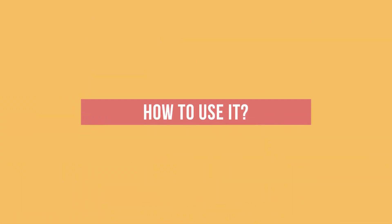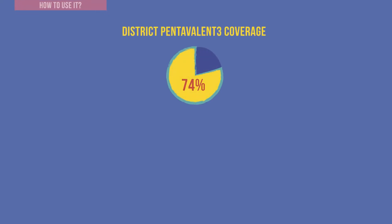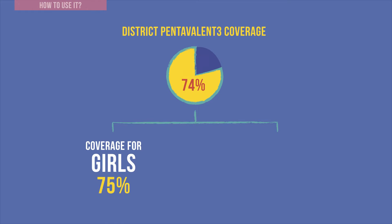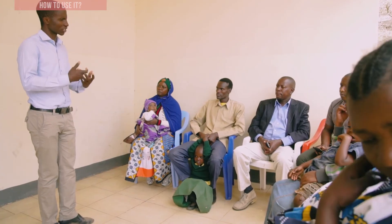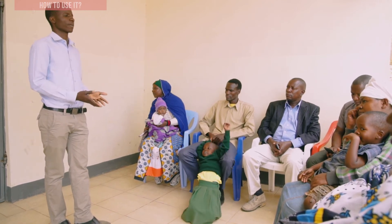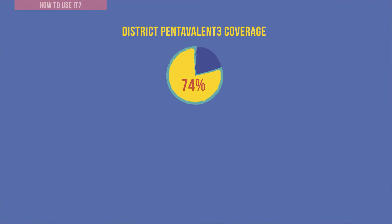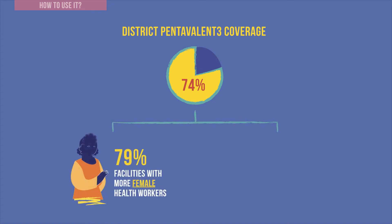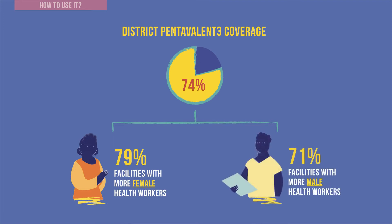How can you use gender data for programme improvement? Let us consider our previous example. Your district has Pentavalent 3 coverage of 74%, coverage for girls is 75% and coverage for boys is 73%. You determine that the difference is not significant and there appears to be no difference in vaccination of girls and boys. Gender may be impacting immunisation coverage in another way. You hold focus group discussions and review additional gender data for your district. You learn that for facilities where health workers are at least 50% female, Pentavalent 3 coverage is 79%. For other sites where most health workers are male, coverage is 71%. You learn that many mothers feel more comfortable approaching female health workers, so attendance is higher at facilities with more female health workers.